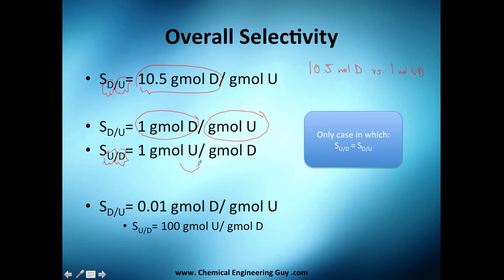You can also call this the non-selectivity - you just switch them, and it's the only case where you'll have the same value. If you have desired versus undesired giving very low selectivity, this means you're actually producing 100 moles of undesired product versus desired product. Just be sure that when they give you data, you put or write desired versus undesired, because the data will change if they give you undesired versus desired, which is not that common but might happen. This is the inverse of the selectivity we're going to use.